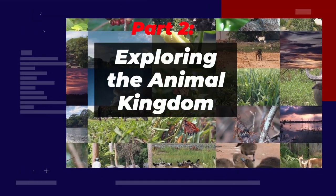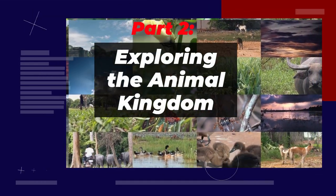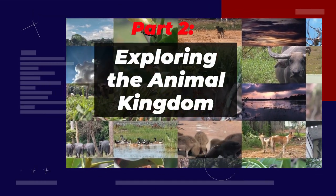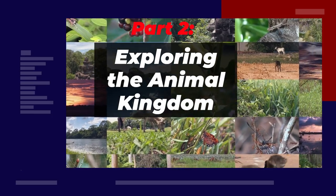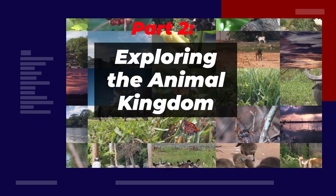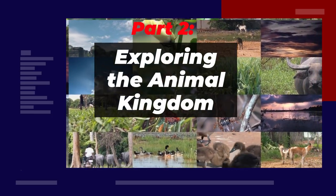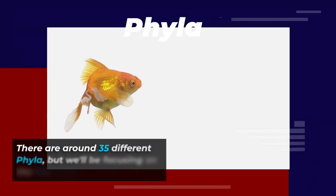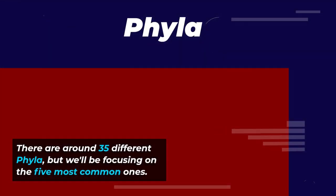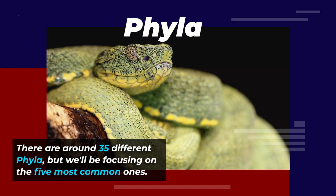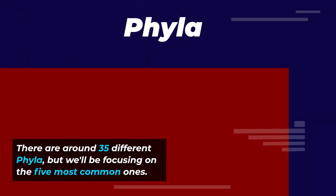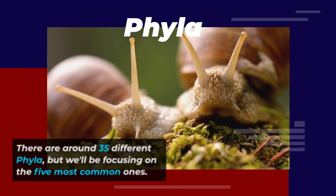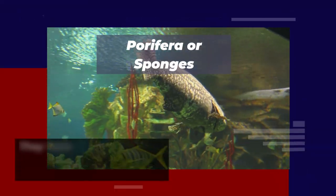Welcome back to our video series exploring the animal kingdom: a beginner's guide. In part one we learned about the animal classification system. In part two we'll be taking a closer look at the major animal phyla. There are around 35 different phyla, but we'll be focusing on the five most common ones.